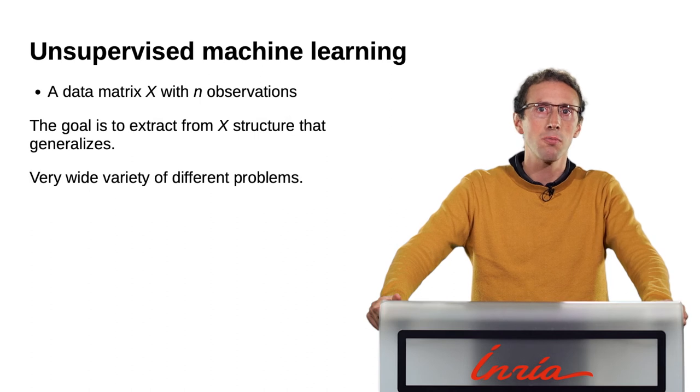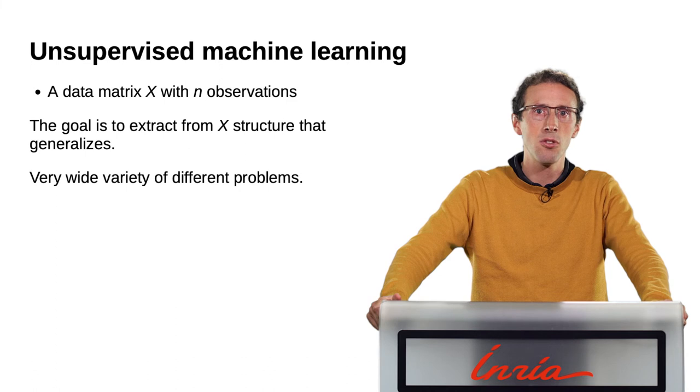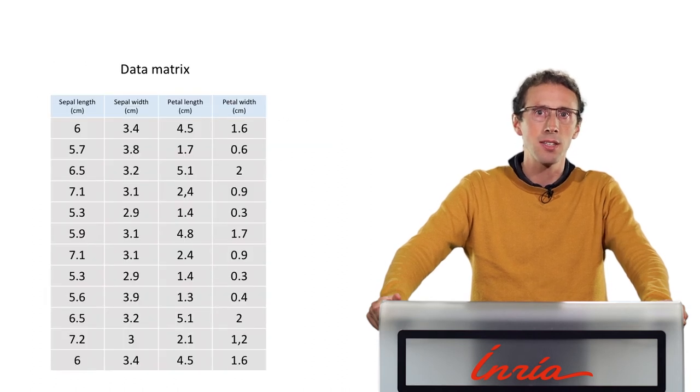In unsupervised learning, we are given the data matrix X, but we have no available target. The goal is then to extract some form of structure from X that generalizes to new data. If we take the example of irises, in unsupervised learning, the input data would not include the type of iris, because the data is not annotated.